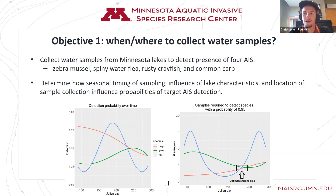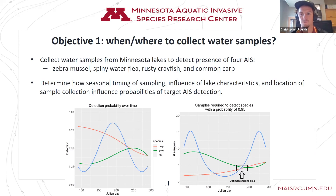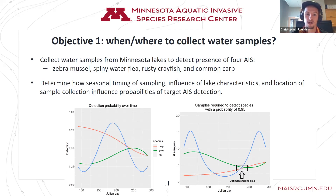We focused on zebra mussels, spiny water flea, rusty crayfish, and common carp. The real overarching purpose of objective one is to determine how the seasonal timing of sampling, the influence of different lake characteristics, and the location of samples can influence our probability of getting these AIS detections.